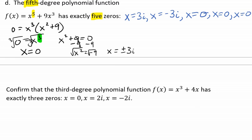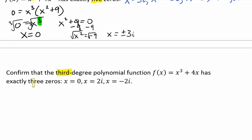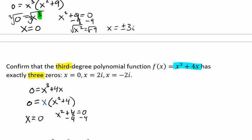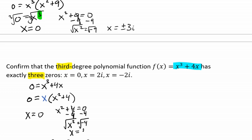What would you do if you were asked to confirm that the third degree polynomial has exactly three zeros: x = 0, x = 2i, and x = -2i? We would take our x³ + 4x and set that equal to 0. Then we would factor out what they both have in common, which in this case is an x. We'd have x² + 4 left, and from there we could do the zero product property. We would get x = 0 and x² + 4 = 0. From there, we would subtract 4 from both sides and get x² = -4, then square root that, which gives us x = ±2i.